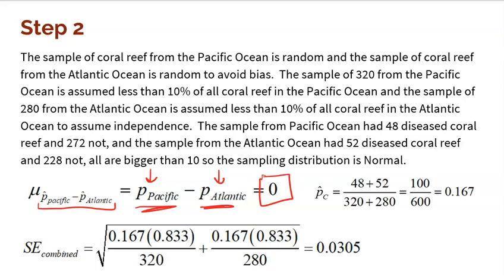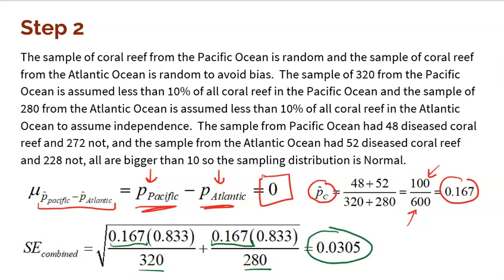Next comes standard error. I have to use the combined standard error. If I truly believe the null is correct and there is no difference, I combine both samples together to get P-hat combined. There are 100 total diseased coral reef out of 600 total, so 100 divided by 600 is 0.167. Using the standard error formula with that combined proportion 0.167 and its complement 0.833, with sample sizes 320 and 280, we get a combined standard error of 0.0305.